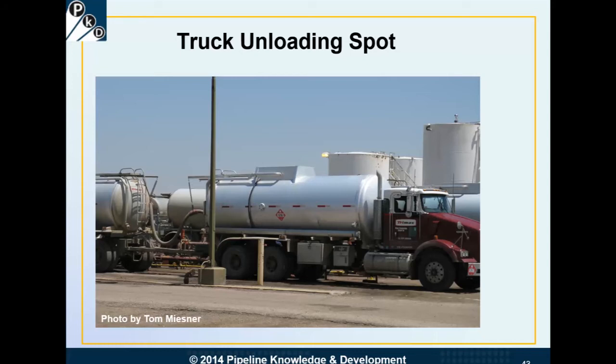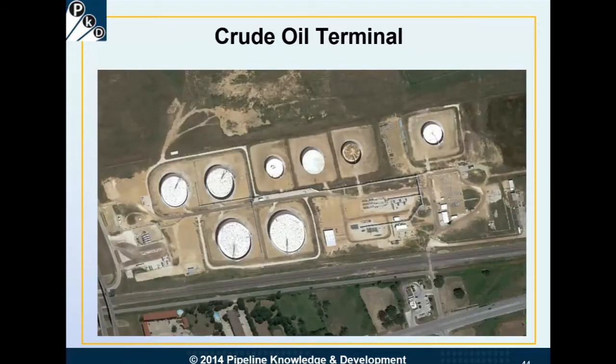Here's another truck unloading spot, up in the Rocky Mountains, where it's very common to have a truck pulling a trailer rather than a tractor-trailer, since the truck gets better traction with weight above the wheels. In areas like the Rocky Mountains, this kind of arrangement is very common. Here is a crude oil terminal where the truck has pulled in and offloaded. You can see a number of tanks, and a little arrow on the left is pointing to the truck unloading spot.